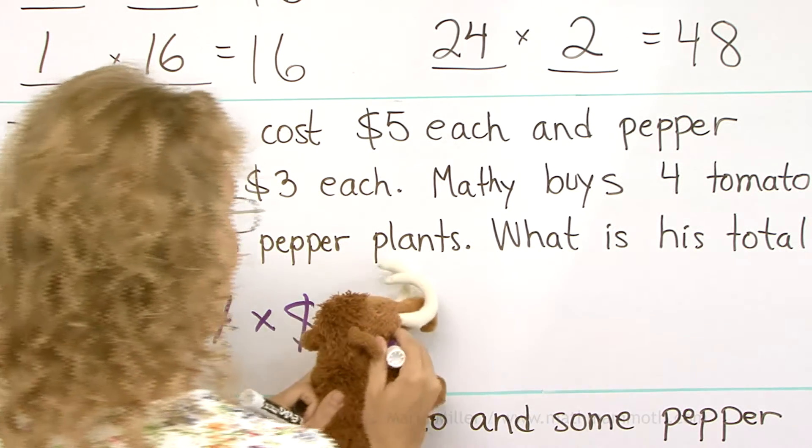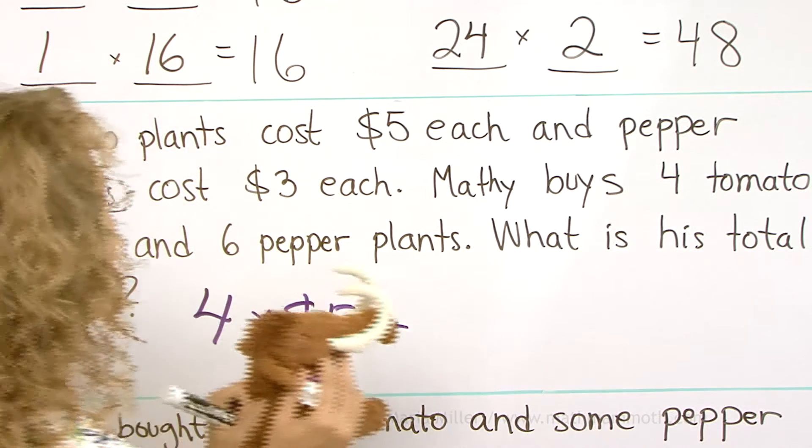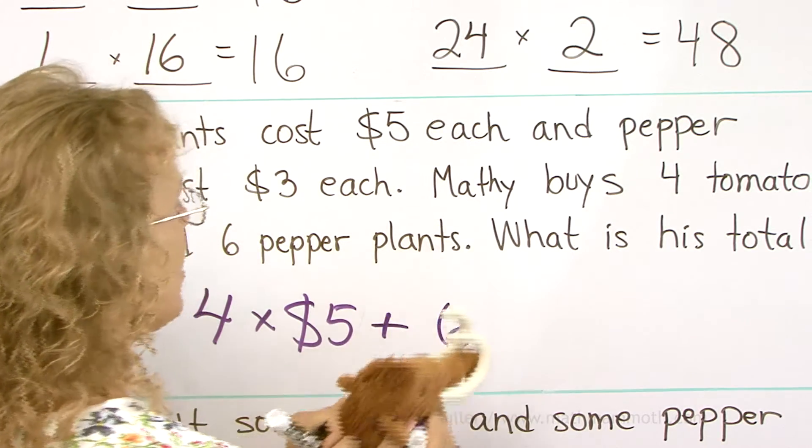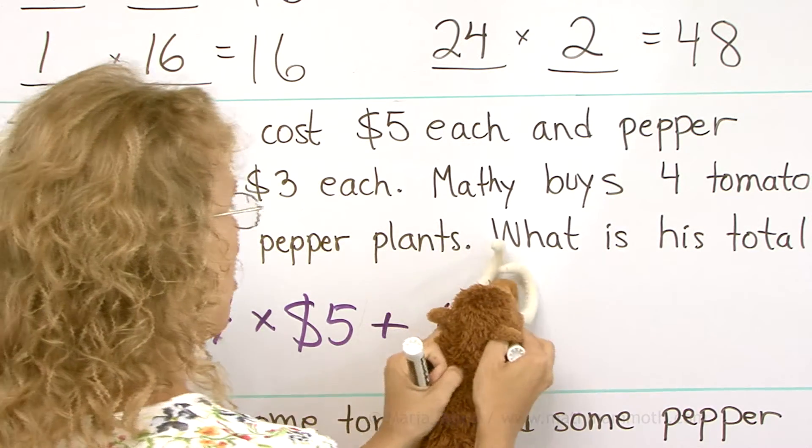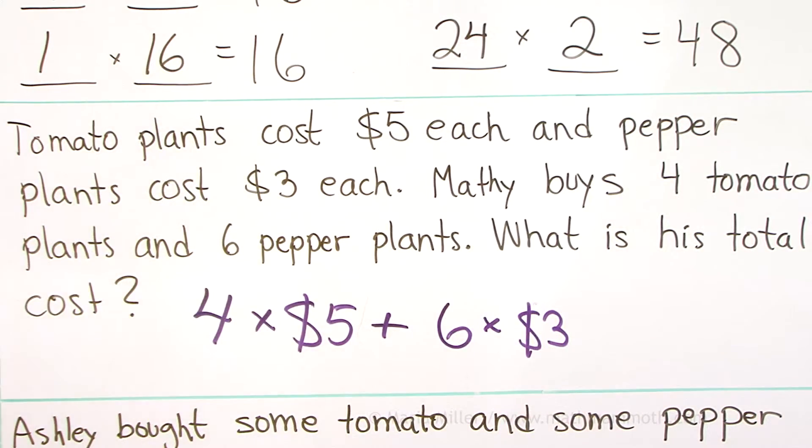And then? Then we add something. What do we add, Matthew? Oh yeah, the pepper plants. Matthew buys 6 pepper plants, and each one costs 3. Good job, Matthew.